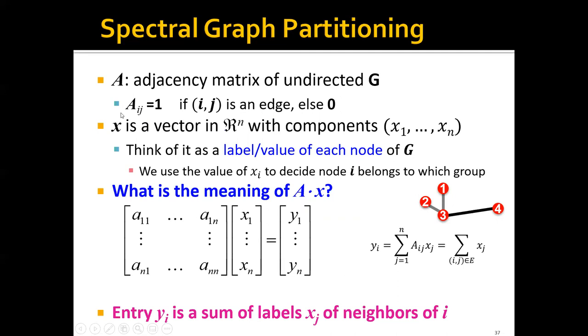where the entry of the adjacency matrix Aij equals 1 if nodes i and j have an edge, and it equals 0 if they do not have an edge.